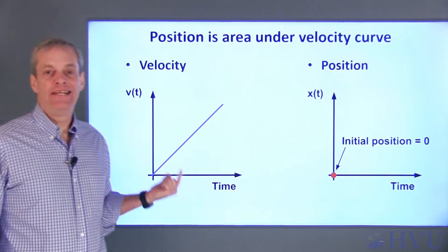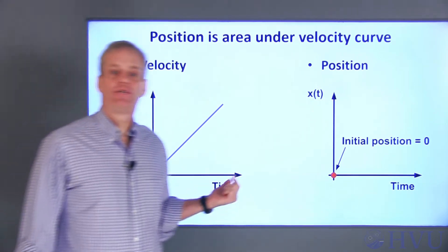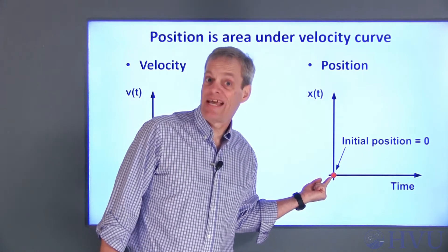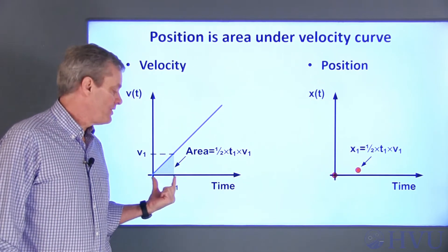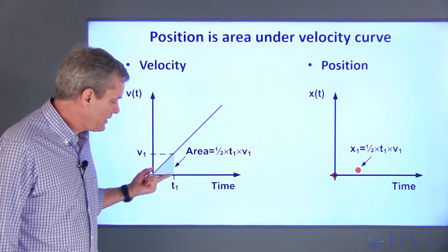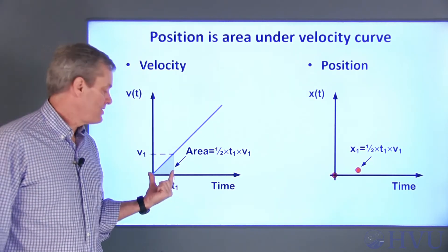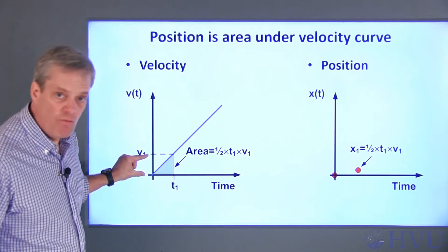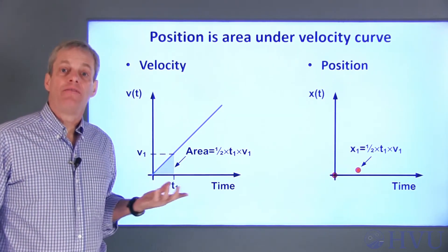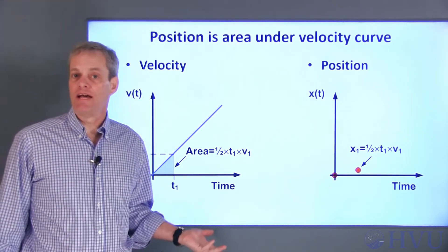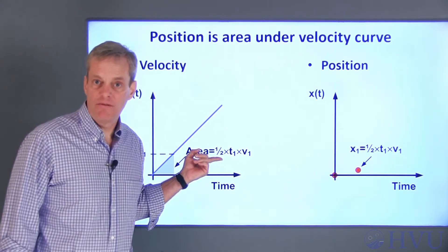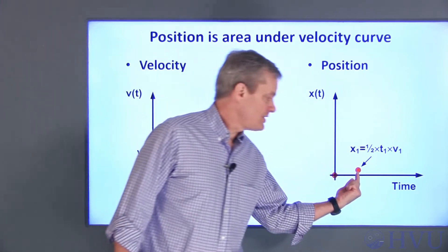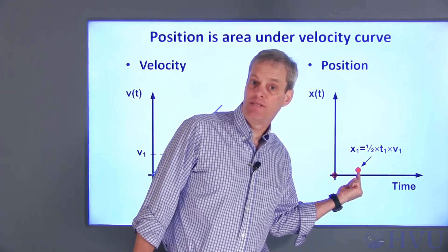As before, I'm going to need an initial condition. I'm going to assume that the rock's initial position is at zero. The area under the velocity curve at time t1 is going to be this little triangle. The triangle has a base t1 and a height v1, which is the velocity at time t1. The area of a triangle is one half times its base times its height, so the area is one half times t1 times v1. This is then the position of the rock at time t1.